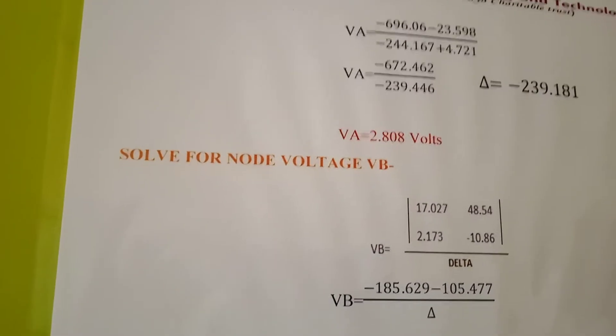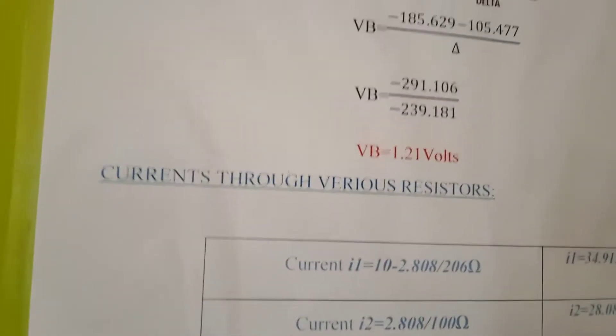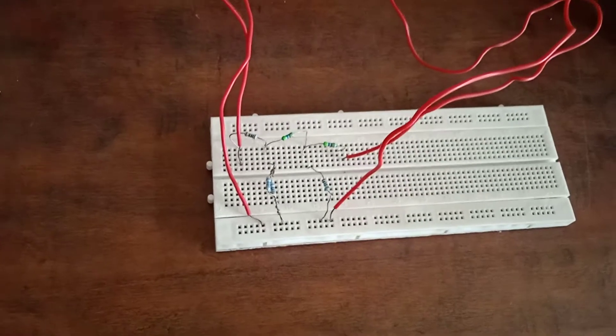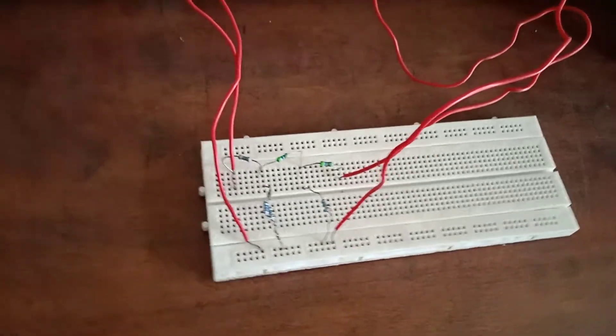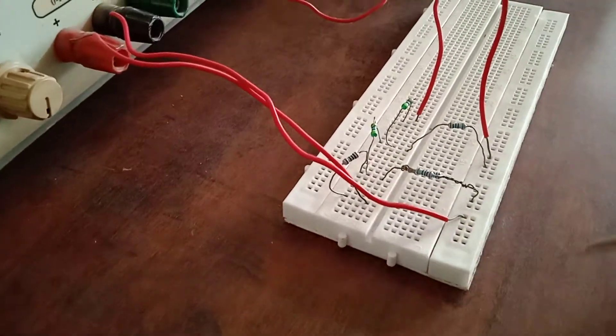So the value of VA is 2.08V and VB is 1.21V. Now we have calculated theoretical values and now we are going to calculate practical values. So we have two voltage sources connected.